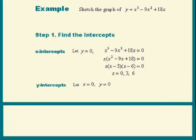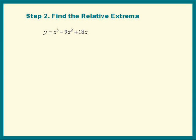The next step is to find relative extrema. We do that by finding the first derivative. The first derivative y' is equal to 3x squared minus 18x plus 18. Three factors out and we get 3 times x squared minus 6x plus 6.